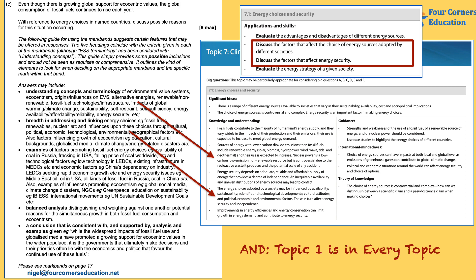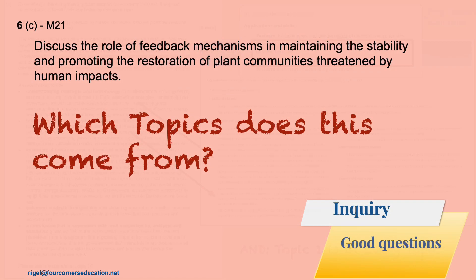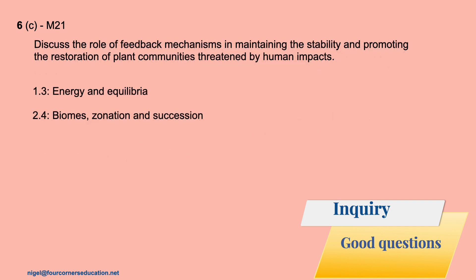And importantly, topic one is embedded in every other topic. So if we're teaching topic one separately and never coming back to it, why are those choices being made? Let's look at another example from May 2021 — though this paper wasn't actually sat because the examination didn't run: 'Discuss the role of feedback mechanisms in maintaining the stability and promoting and restoring plant communities threatened by human impacts.' Where's that coming from? It's coming from energy and equilibria, and from biomes, zonation, and succession. Students are already having to synthesize different parts of the guide.